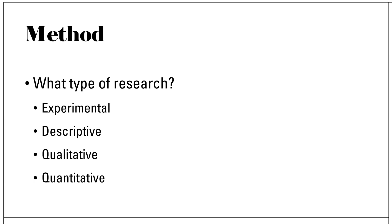The next part of your research paper is the method section. This section is actually the easiest to write because basically you report or write about exactly what you did to collect your data and to analyze your data. You can include the following pieces of information: you may explain what type of research it is — is it an experimental research study, is it a descriptive research study, and what kind of data you use — is it mostly qualitative or quantitative?